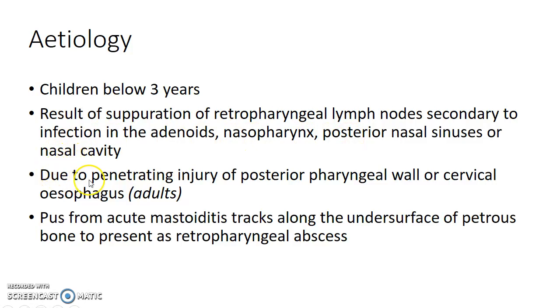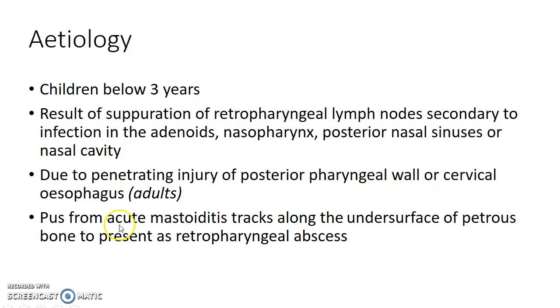In adults, it can occur due to penetrating injury of the posterior pharyngeal wall or cervical esophagus. Rarely, pus from acute mastoiditis tracks along the undersurface of the petrous bone to present as retrofaryngeal abscess.